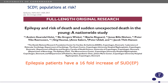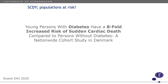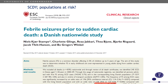Another population at risk is epilepsy, termed sudden unexpected death in epilepsy. In our series we found a 16-fold increased risk of sudden unexpected death if you have epilepsy in the young. This is also the case for diabetes — in a study just accepted in 2019 in the European Heart Journal, we found that patients with type 1 and type 2 diabetes have an eightfold increased risk of sudden cardiac death compared to persons without diabetes. Also, febrile seizures — something quite benign — we found to carry a twofold increased risk of sudden cardiac death.